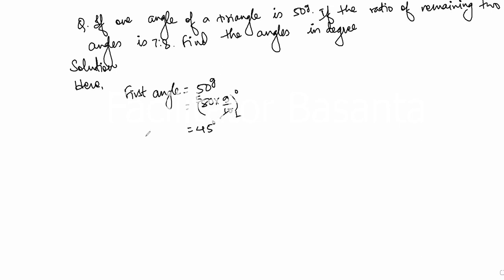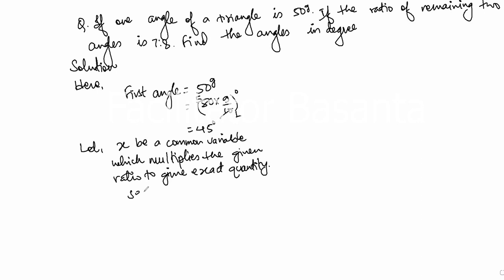Now, the ratio of remaining two angles is given. It means that we need to suppose, let second angle be, okay, before this, we need to write something. Let x be a common variable which multiplies the given ratio to give exact quantity, means the angle.